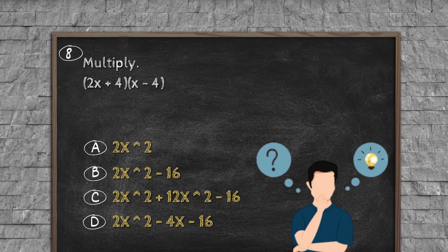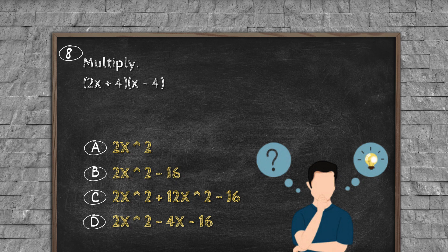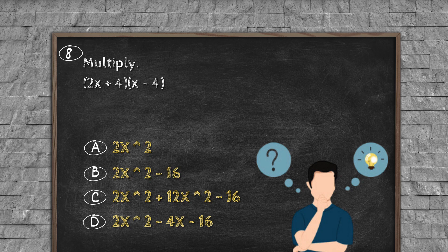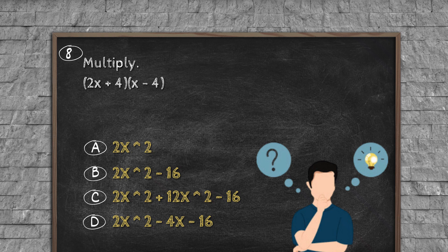Question number eight: Multiply (2x + 4)(x - 4). Option A: 2x². Option B: 2x² - 16. Option C: 2x² + 12x - 16. Option D: 2x² - 4x + 16.